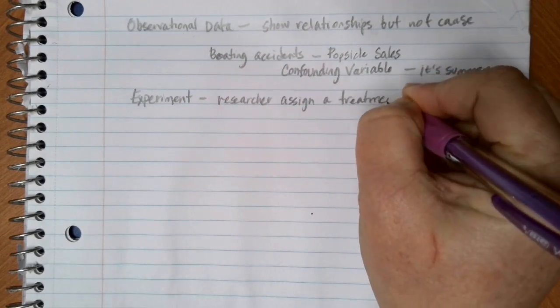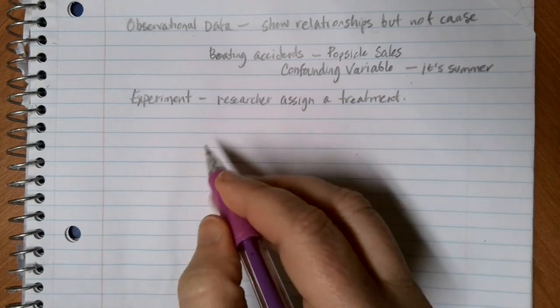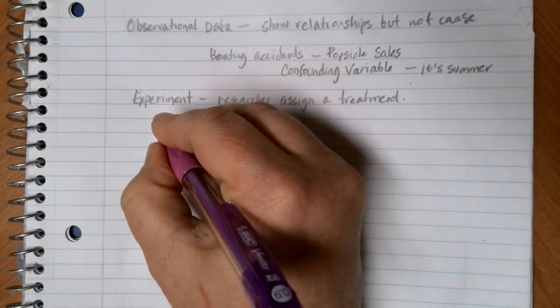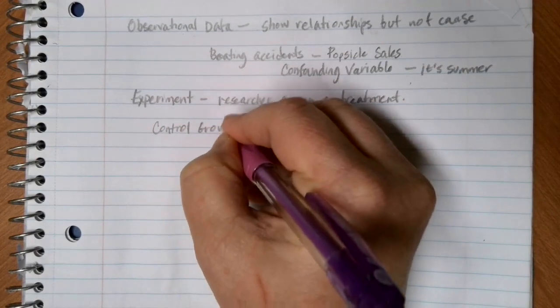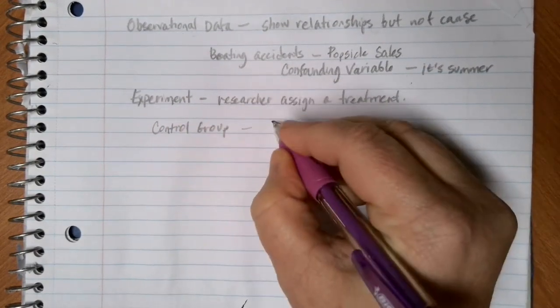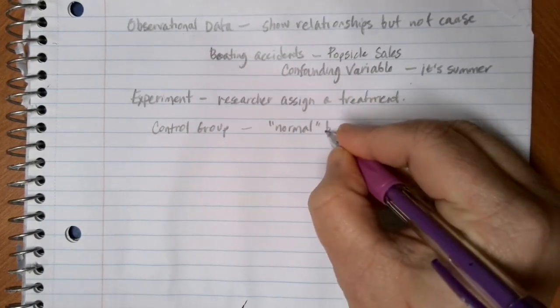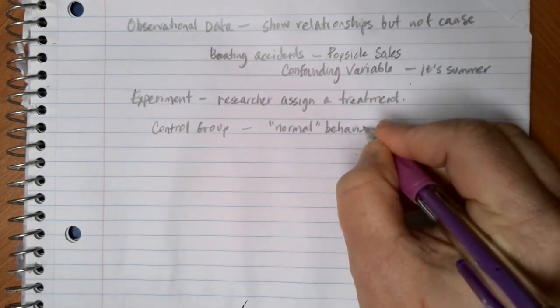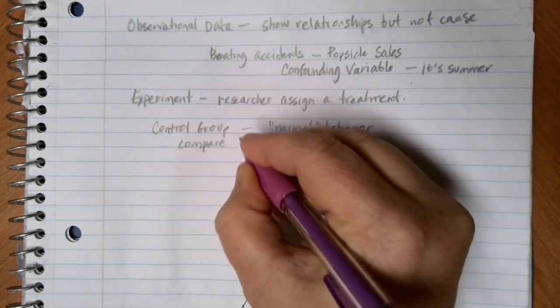That doesn't prove anything very well. So a lot of times for a good experiment, what we'd like to do is introduce what we call a control group. A control group is a group that gets normal behavior. And then you're going to compare that to our treatment group.